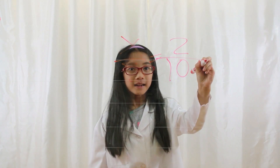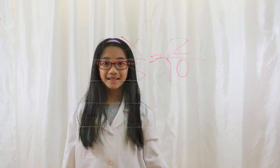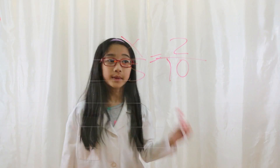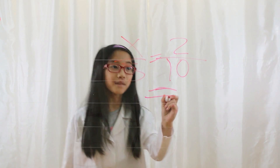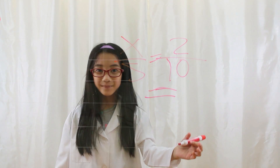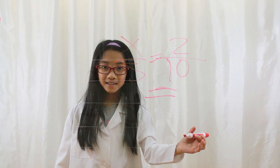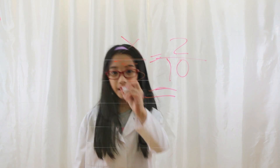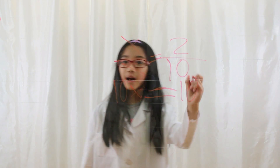Let's say you have x over 5 equals 2 over 10. What is the first thing you need to do? If you said that you bring the equal sign down, you are correct. Now what is the first step you need to do? If you said that you cross multiply — 10x equals 10 — you are correct.